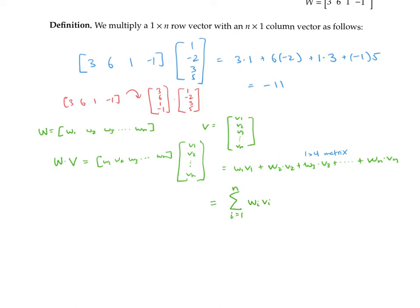Notice that we've only defined multiplication for a one by n row vector times an n by one column vector. It wouldn't make sense to multiply a row vector and column vector with different numbers of entries, because the entries wouldn't line up. It would be possible to define multiplying a column vector times a row vector in that order — there are a couple of ways to define this, one of which may surprise you. But for now, we're going to stick with row vectors times column vectors, because that's what we need to define more general matrix multiplication.